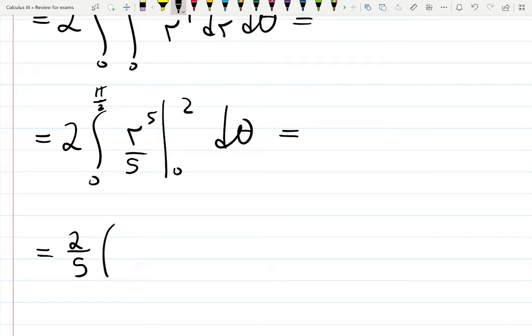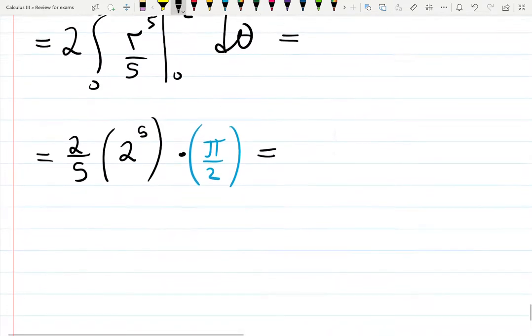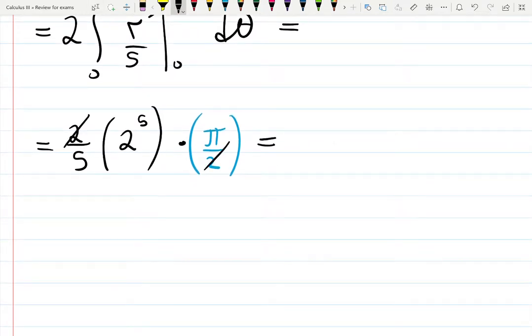The result of plugging in 2 gives you 2 to the 5 minus 0 to the 5, times theta plug pi over 2 minus 0 gives you pi over 2. So my final answer became, let me see if it matches the result I need.